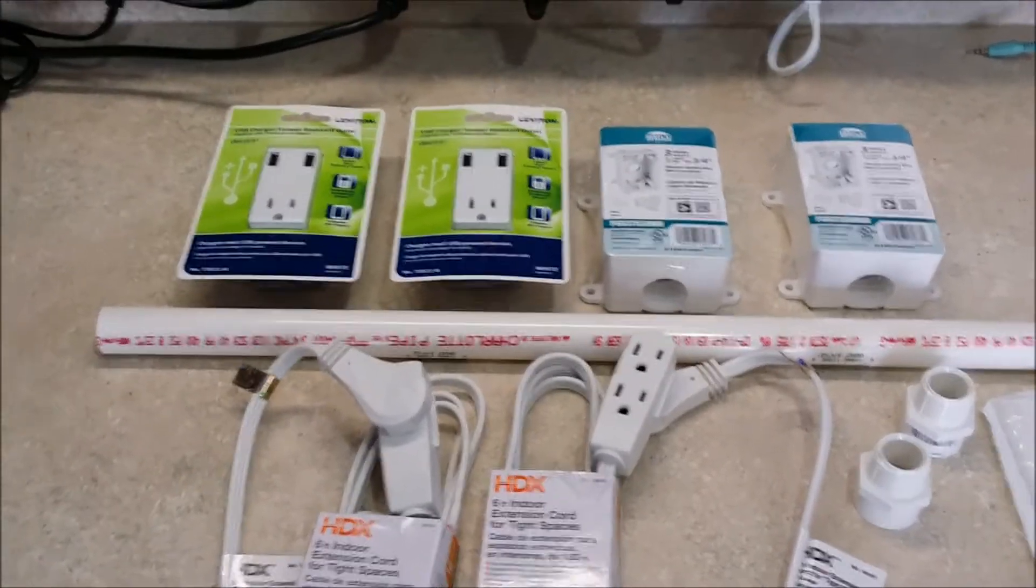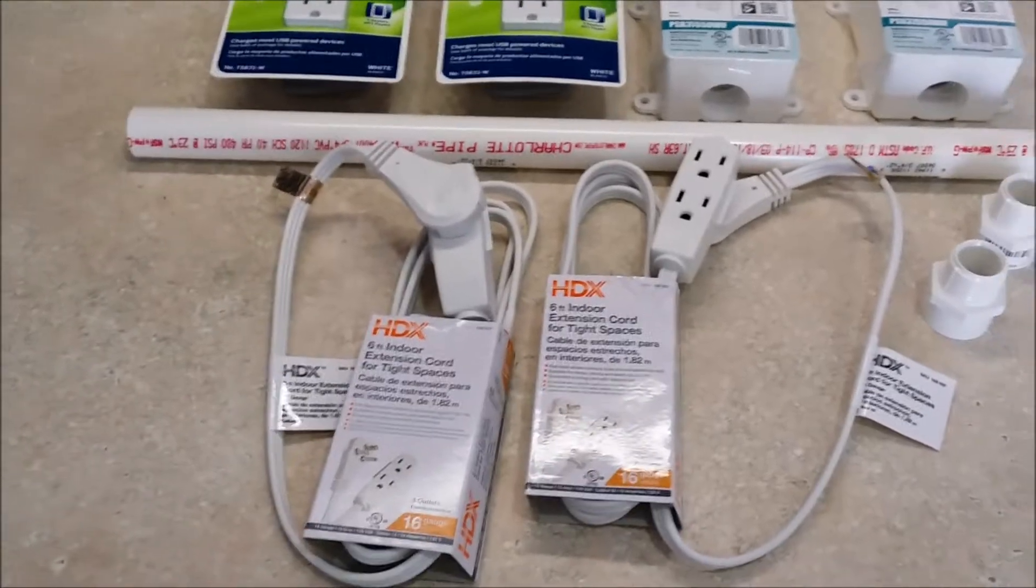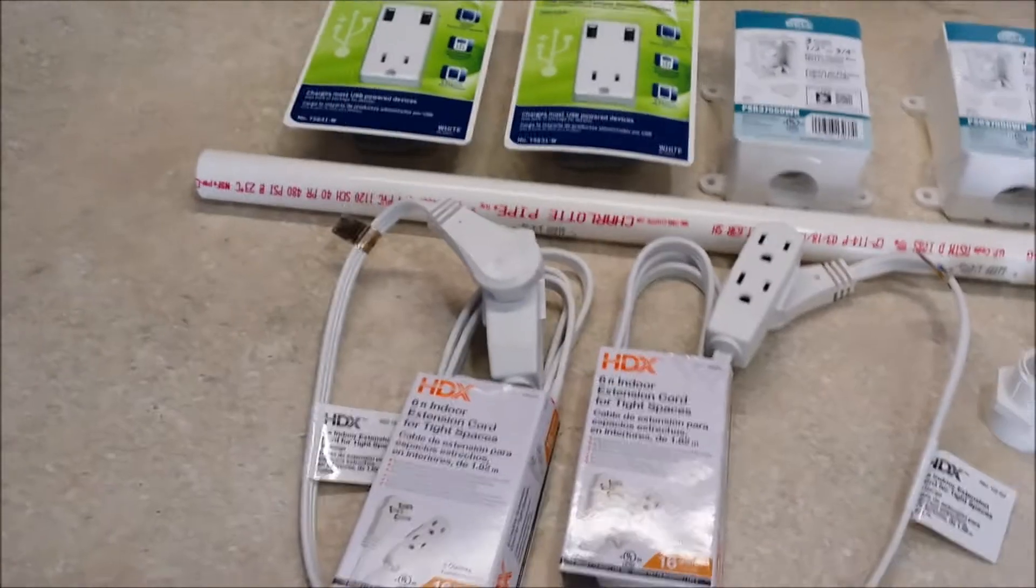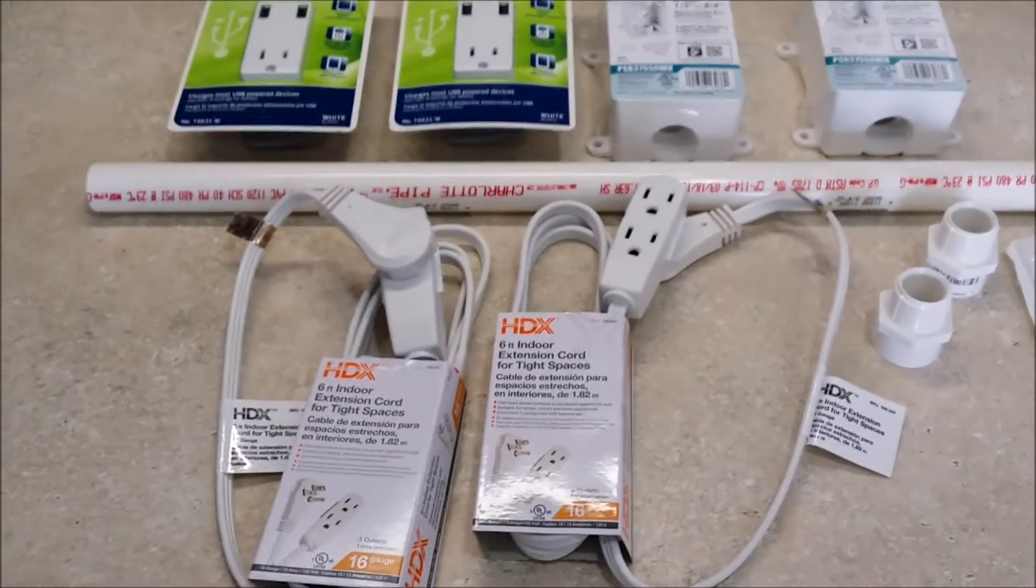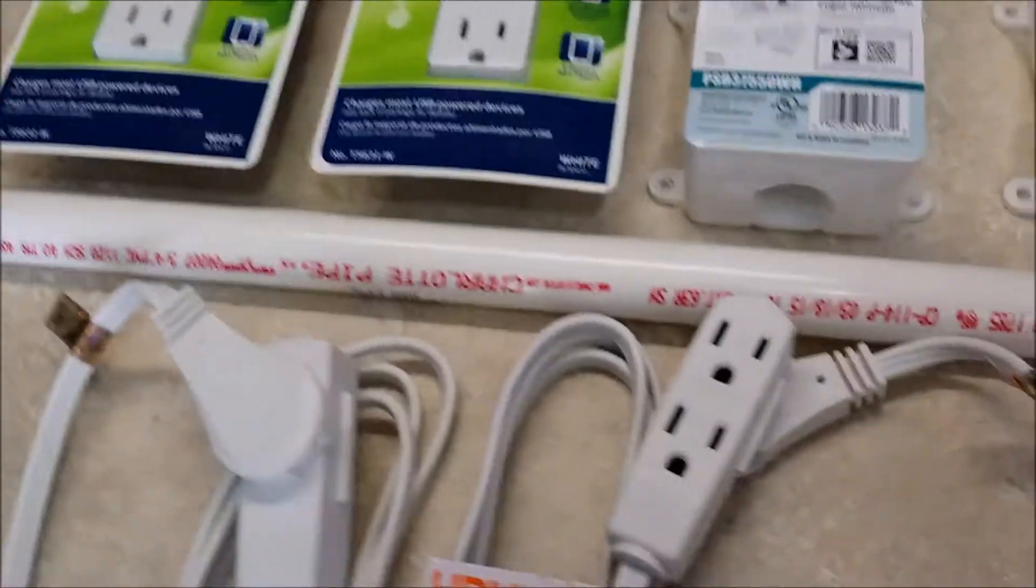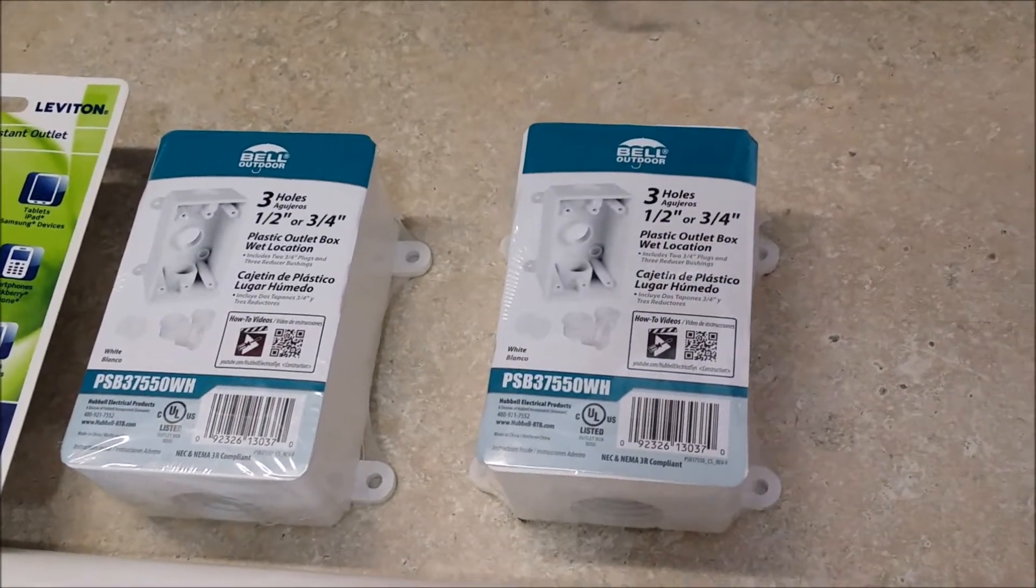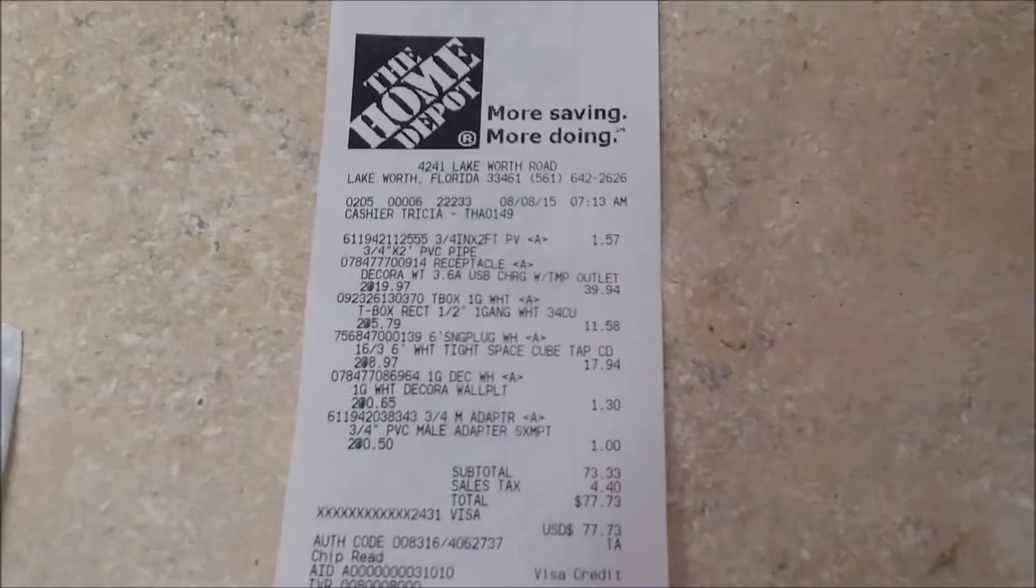I believe they were about $20 each. These are the other items I bought: a couple of extension cords with the flat edge so they can go behind the bed and nightstand without sticking out, a piece of PVC pipe, a couple of outlet boxes, some adapters for the pipe, and faceplates. Here is the receipt.